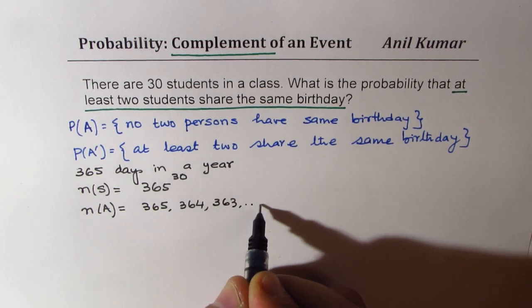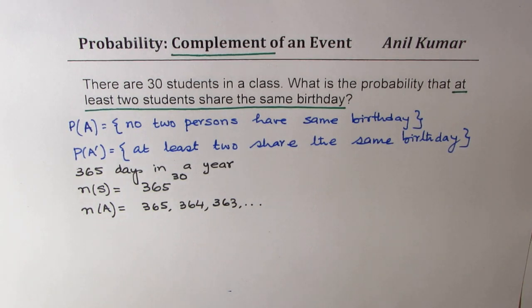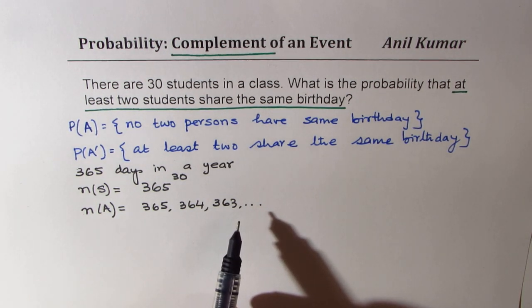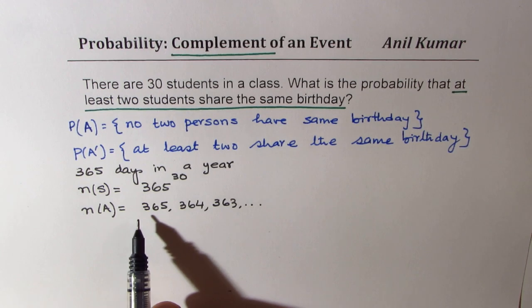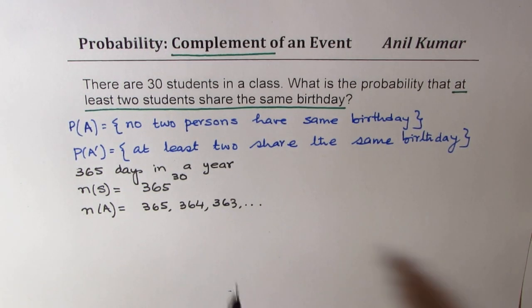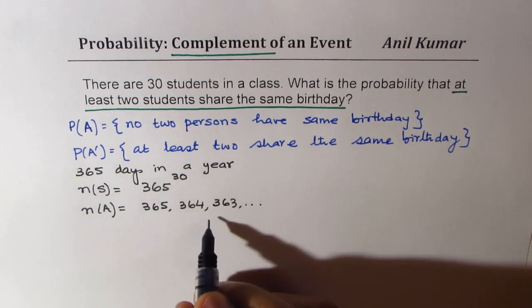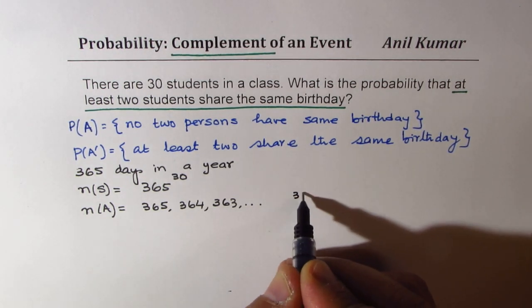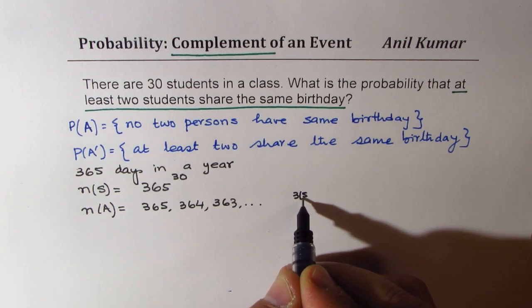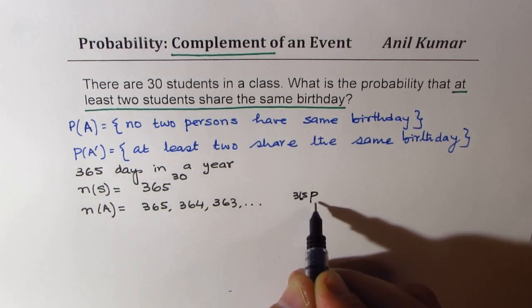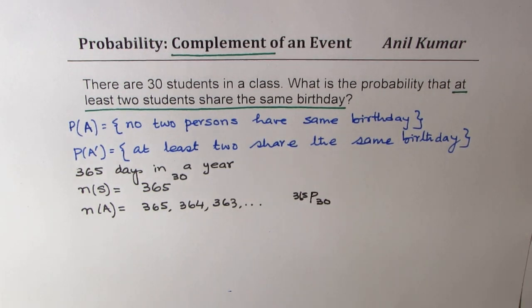So what we see is that for all the 30 persons, it reduces. So ultimately we will have, which could be seen as we have only 30 people. So out of 365 days, 30 days can be selected.